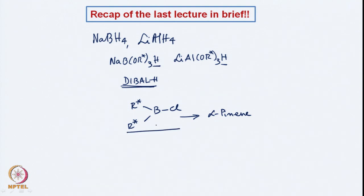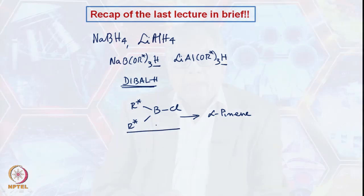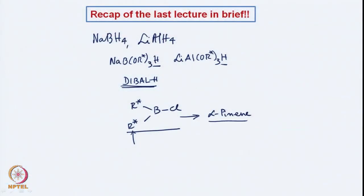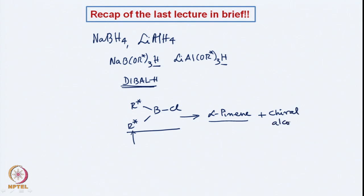This reducing agent behaves like a reducing agent but does not have a hydrogen as a hydride attached to boron directly. It is in this particular part that after the hydride is transferred, it leads to alpha-pinene, and of course we get a chiral alcohol. So these are all the different types of reducing agents we discussed.